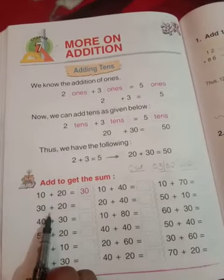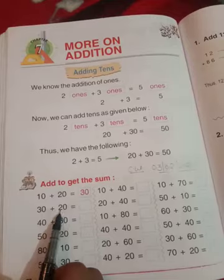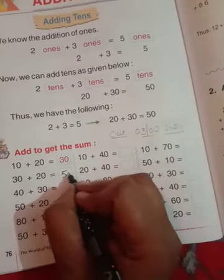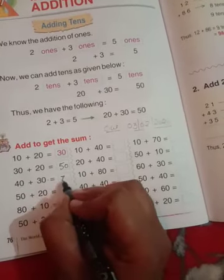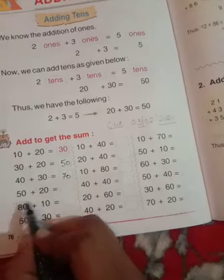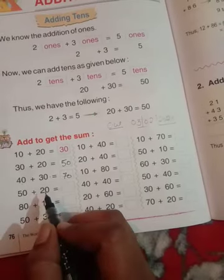Thirty plus twenty equals? Fifty. Forty plus thirty? Seventy. Fifty plus twenty? Seventy.